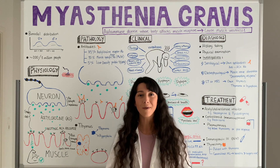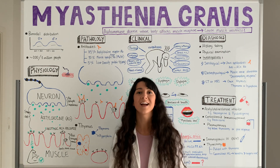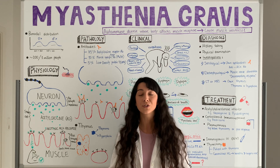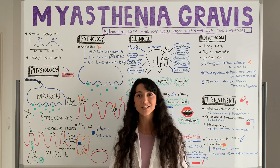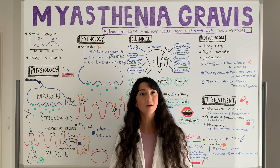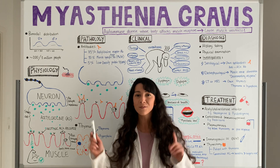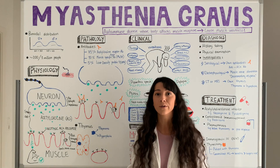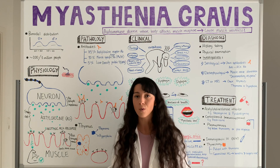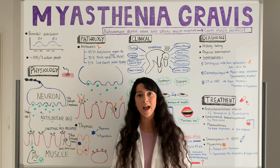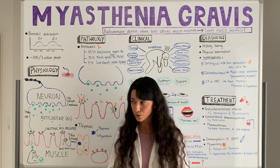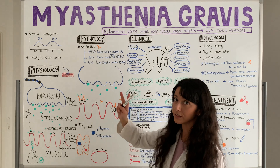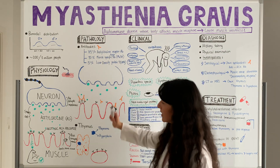In this video I will talk about what exactly goes wrong in myasthenia gravis. If you haven't watched part 1, which is introduction and physiology, I would recommend you do that first. So let's get into what exactly goes wrong in myasthenia gravis and why these patients are having muscle weakness. In order to understand that we have to talk about two different things: antibodies and thymus.